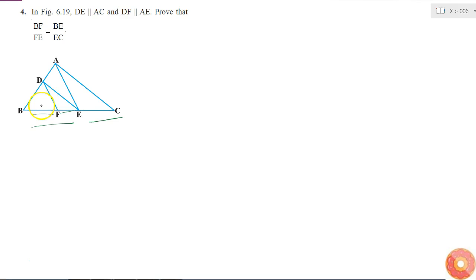So here if I try to do it, it might be a little not so clear. So I have DE parallel to AC. If I consider the triangle ABC, I am drawing it again, the same triangle.